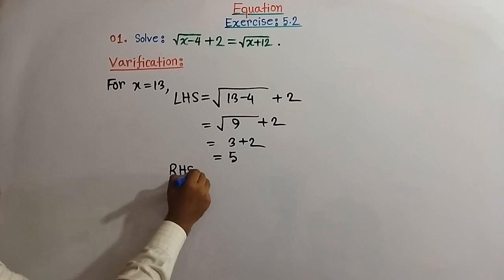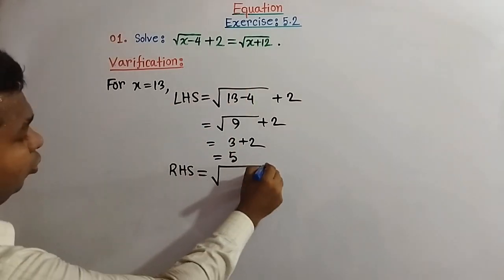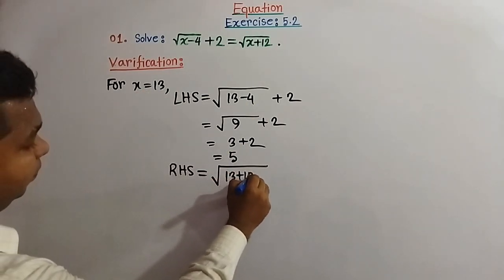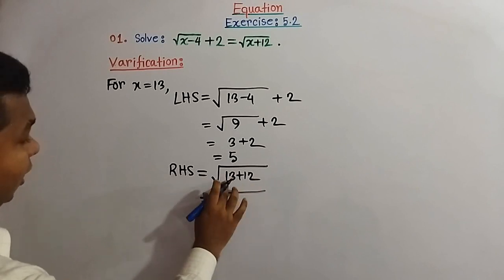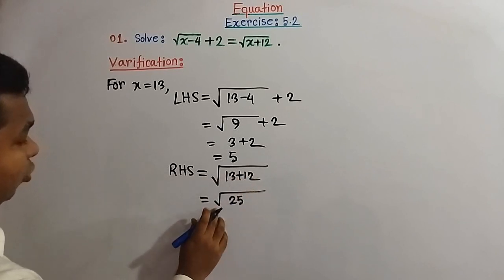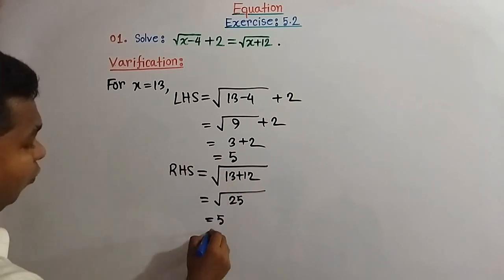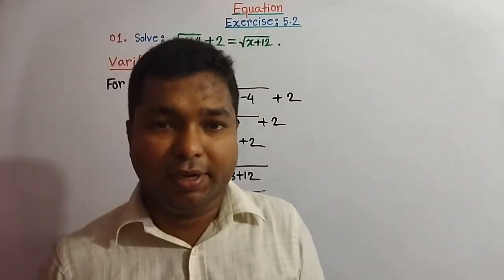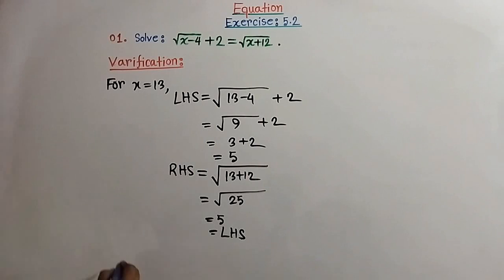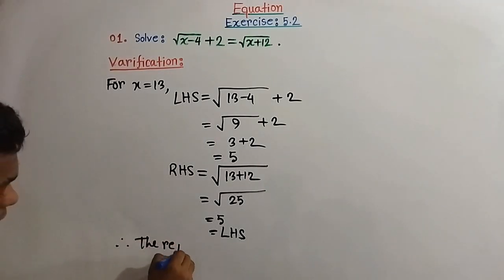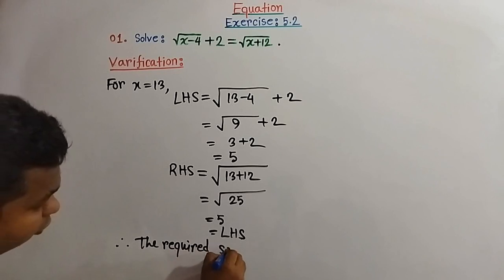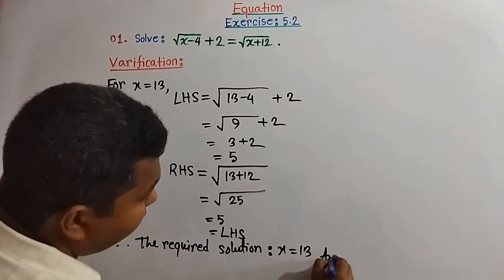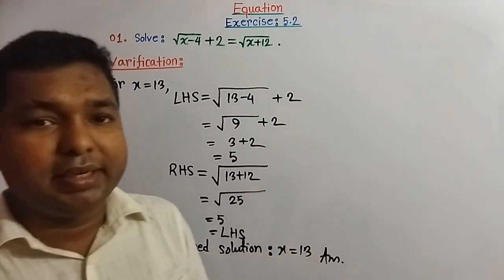Right hand side is square root of (x plus 12). Substituting x equal to 13: square root of (13 plus 12) equal to square root of 25 equal to 5, which is equal to the left hand side. So x equal to 13 satisfies the given equation. Therefore the required solution is x equal to 13.